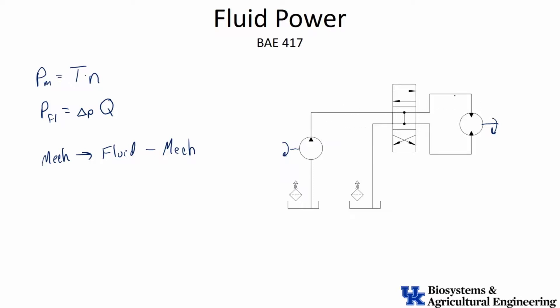One key reason we do this is that hoses connect the pump to the valve and out to the hydraulic motor — and hoses can go anywhere. We can go around corners, up and down hills, through holes, bending back and forth. That flexibility is one of the main reasons we use fluid power.